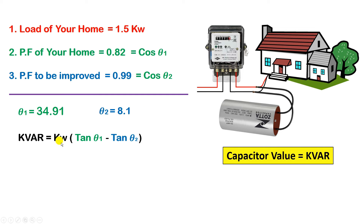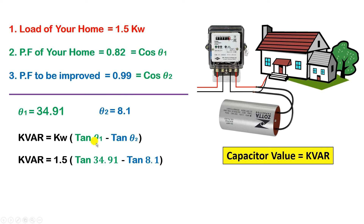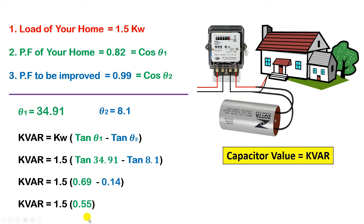Putting the values into the formula: kVAR = 1.5 × (tan 34.91 − tan 8.10) = 1.5 × (0.69 − 0.14) = 1.5 × 0.55 = 0.82 kVAR. So the capacitor needed for our home to improve power factor from 0.82 to 0.99 has a value of 0.82 kVAR.